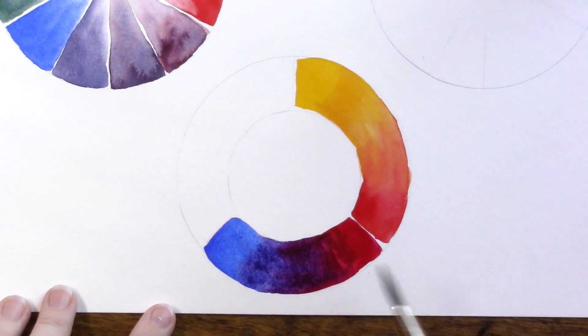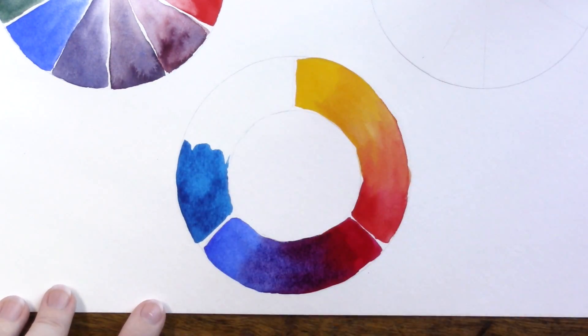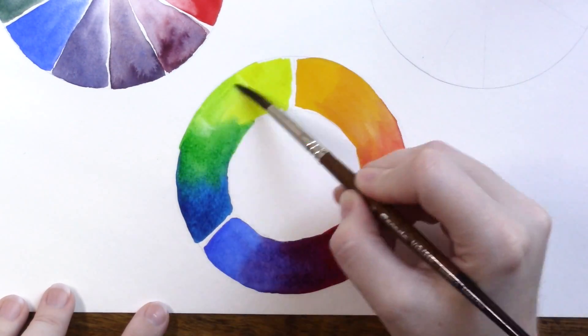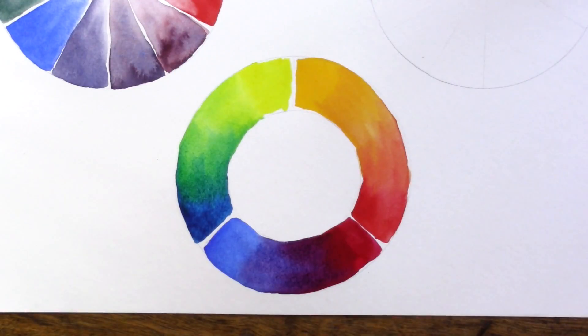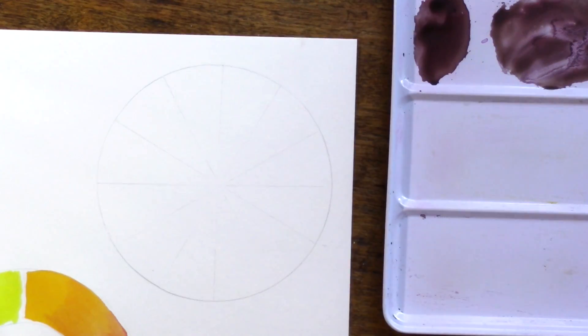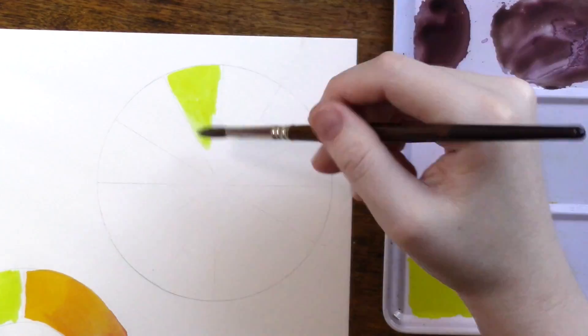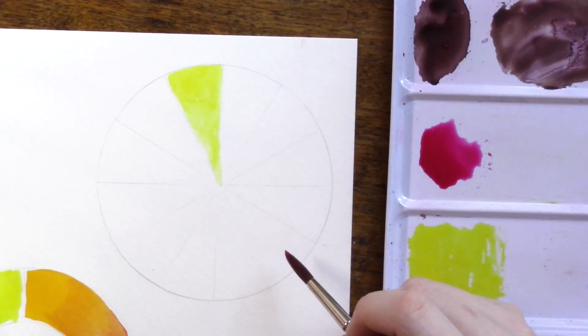In previous color mixing videos we used our standard red, blue, and yellow to mix our different colors. As any elementary school student will tell you, those are the primary colors, right? Well, not exactly. What if I were to tell you that red isn't actually a primary color?